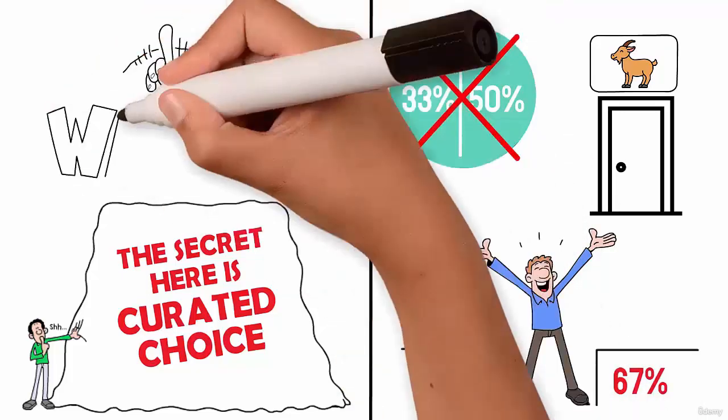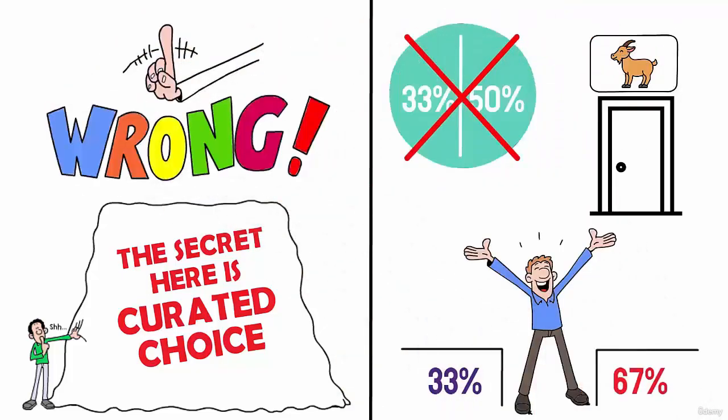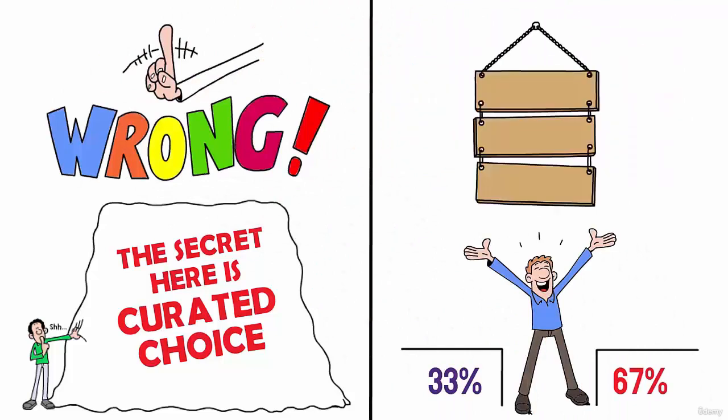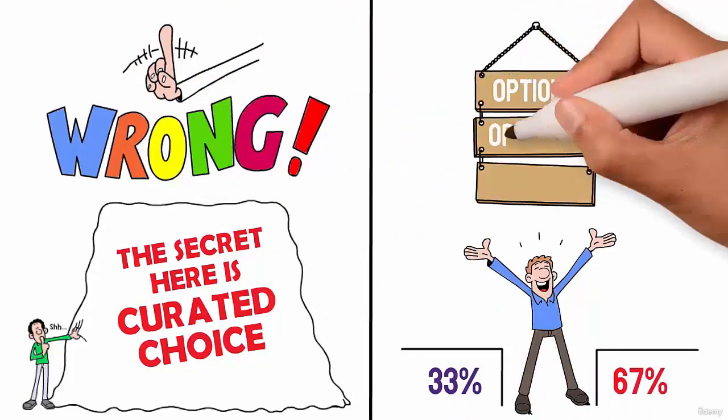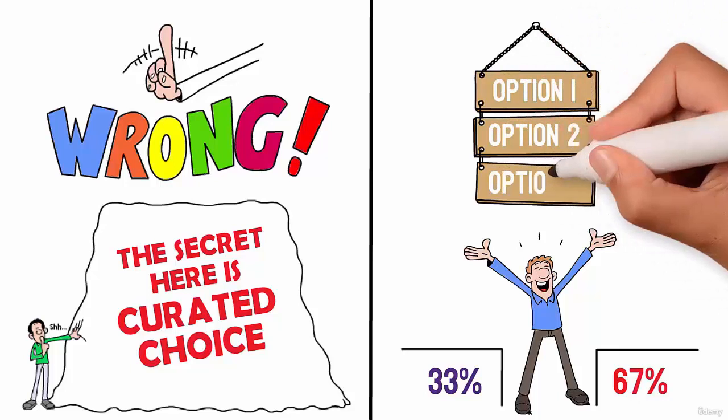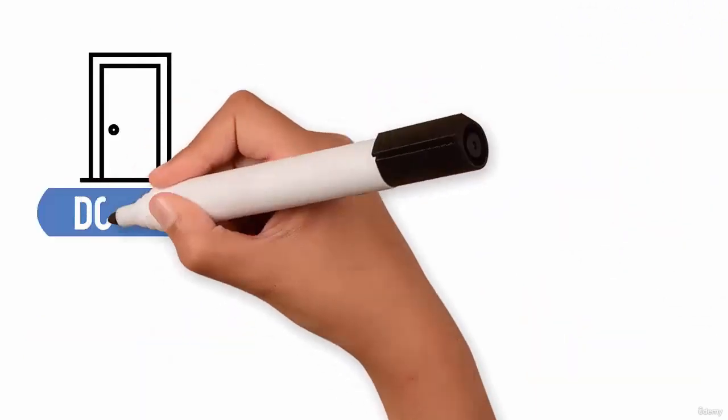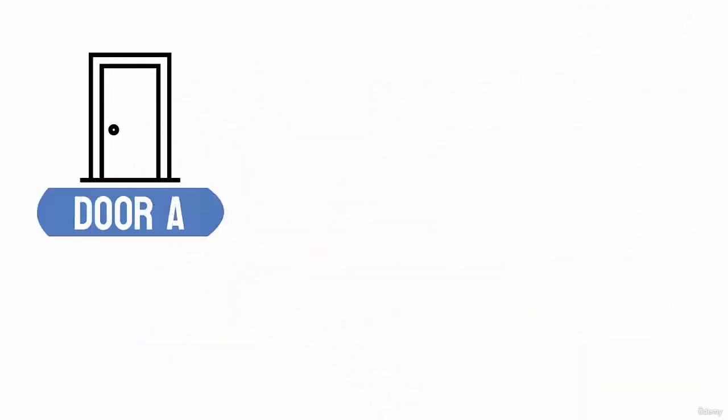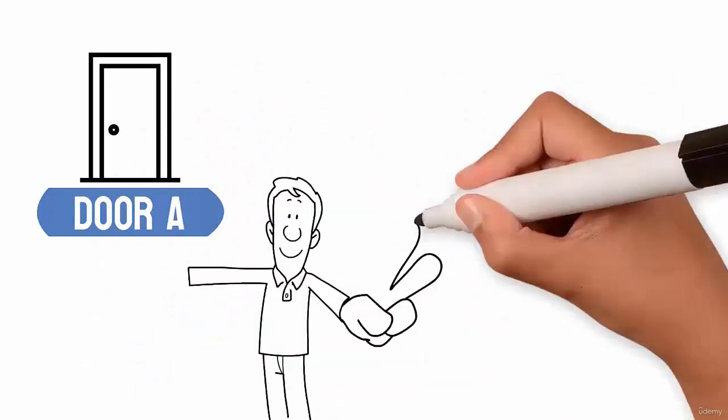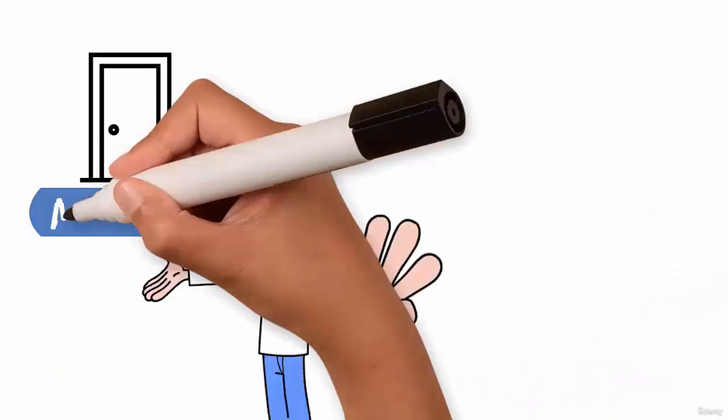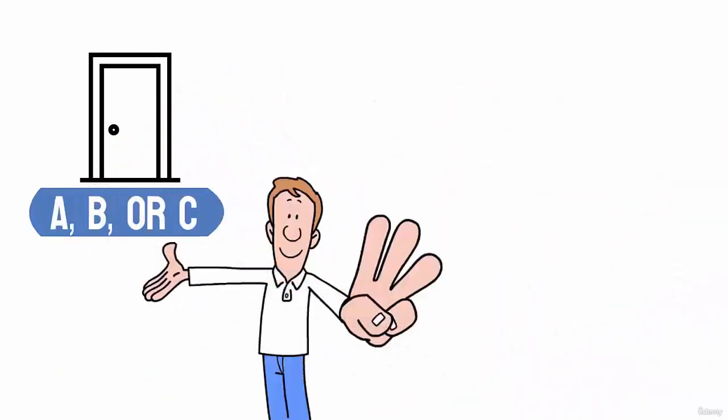I'll admit that this is very counterintuitive. And for me, the easiest way to understand is by going through all possibilities. Imagine that you pick door A. There are three possibilities for the car since it can be inside doors A, B or C.